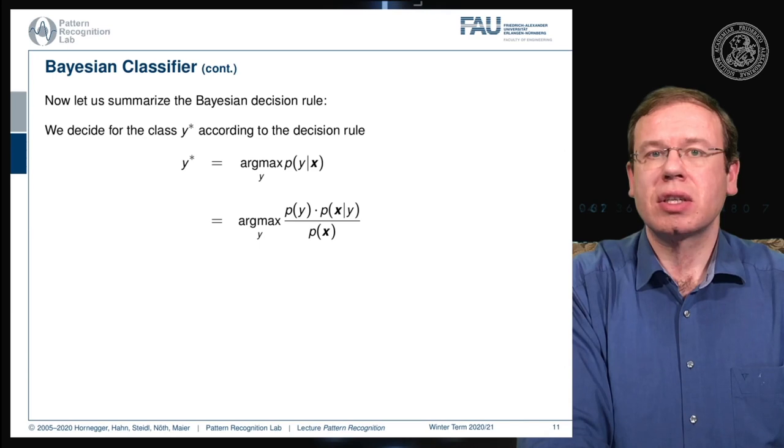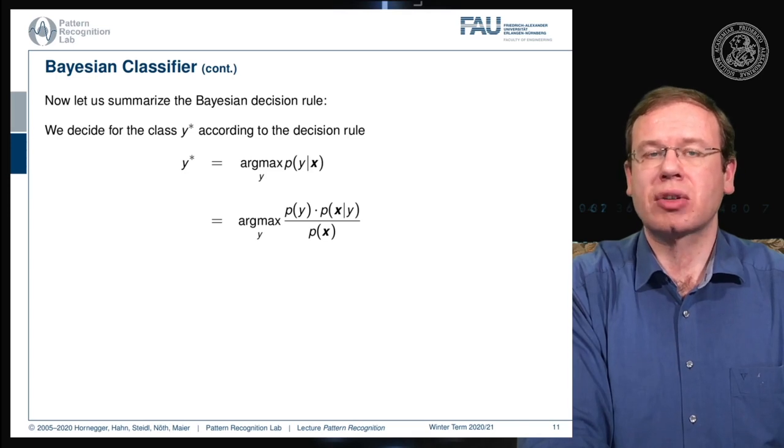Then we need in addition the actual probability for the observation given class y divided over the probability of observing the actual evidence.